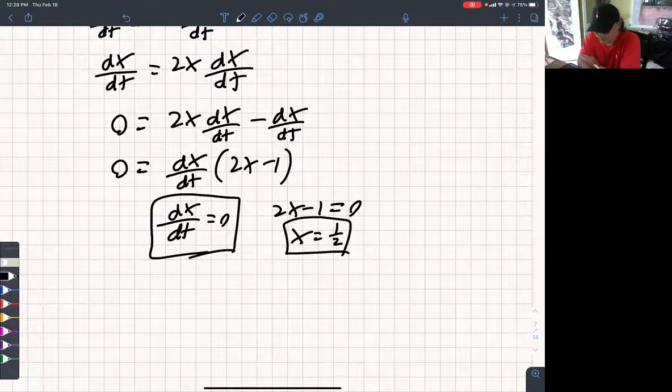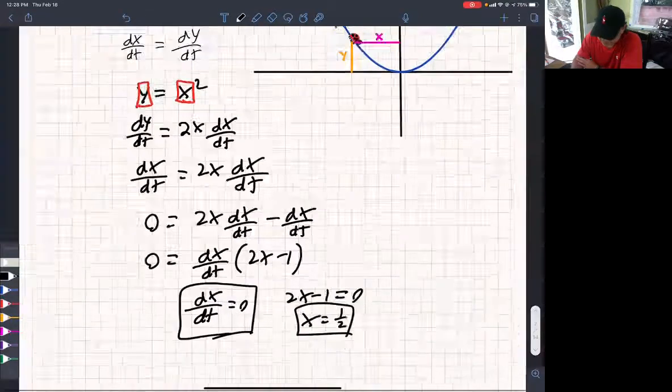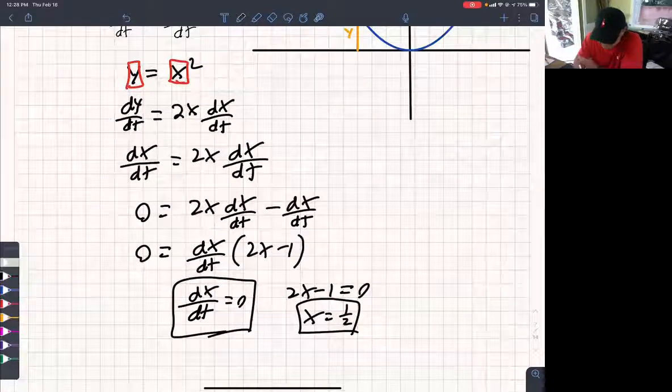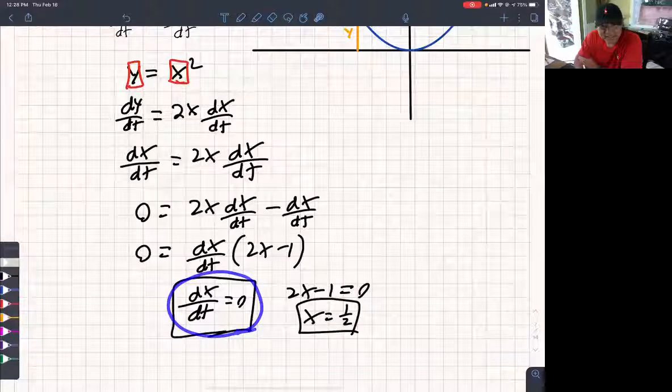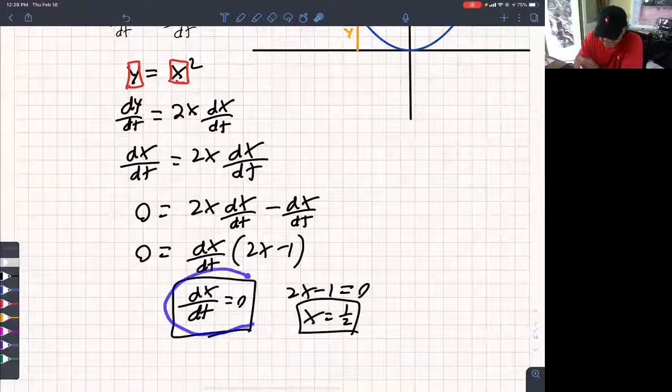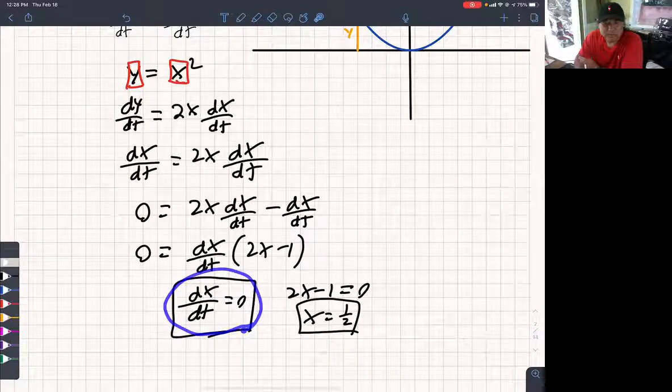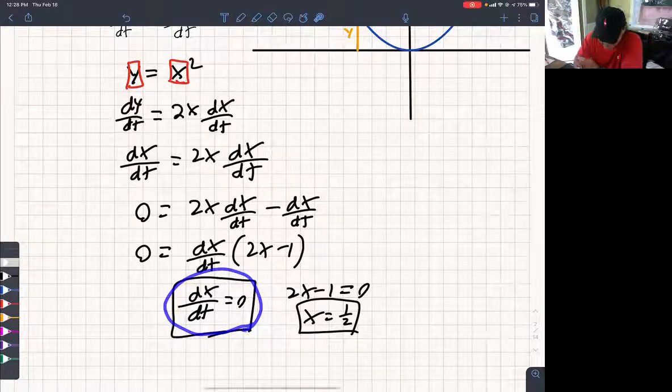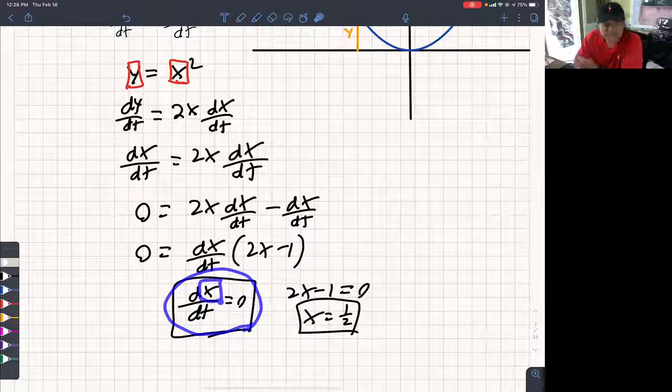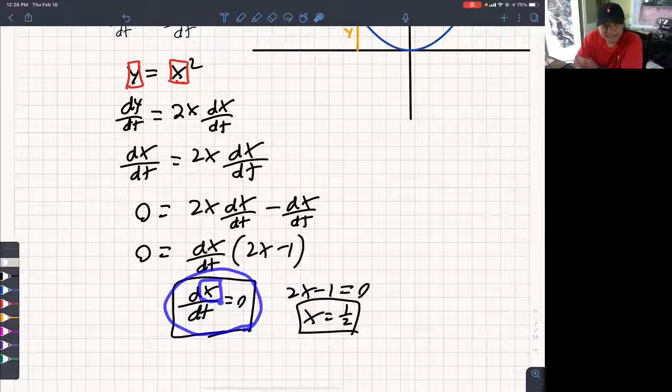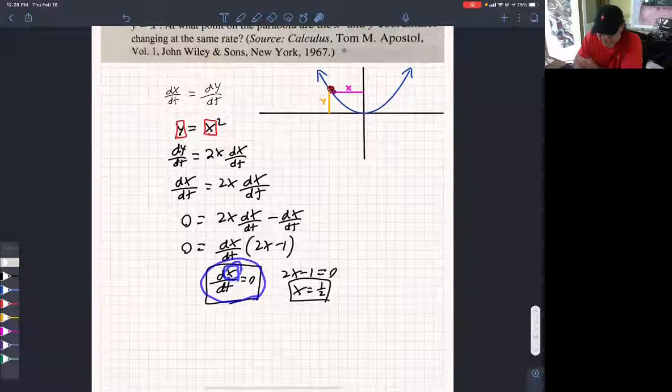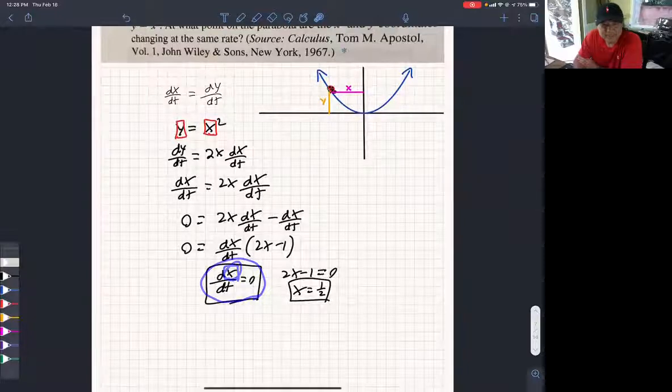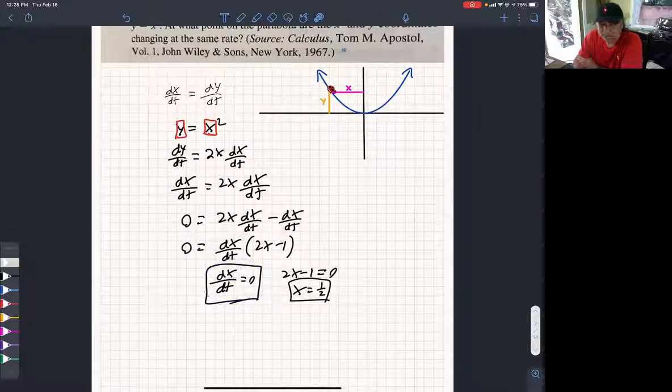So this is claiming if dx/dt is 0, that's a solution, right? Well, what does it mean that dx/dt is 0? That means x is not changing, right? But in the context of the problem, what does it mean that x is not changing? Usually I would pause and have you think, but we're running out of time.